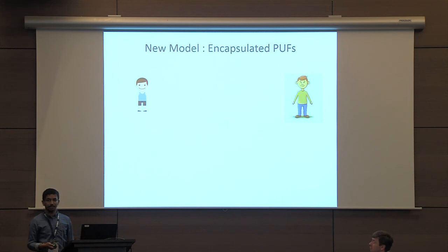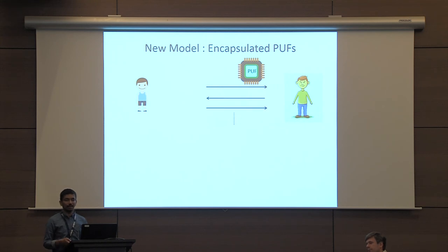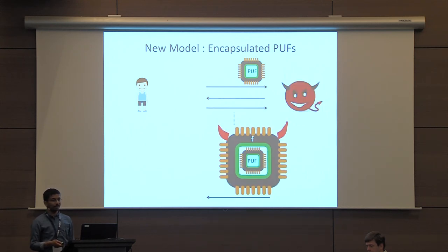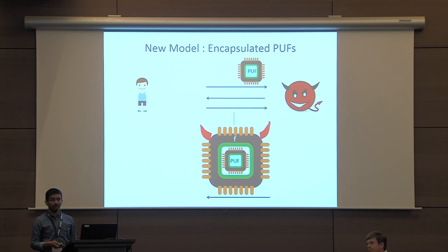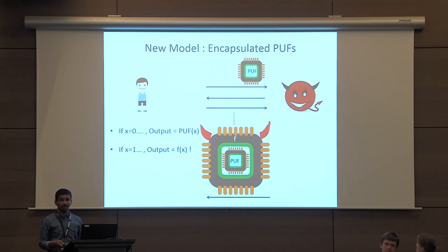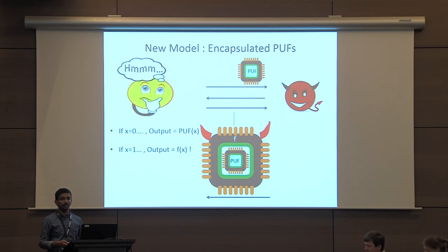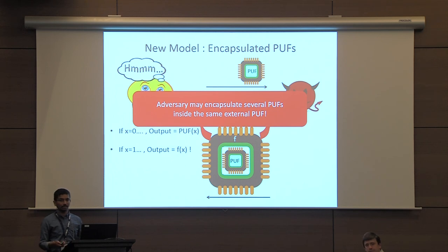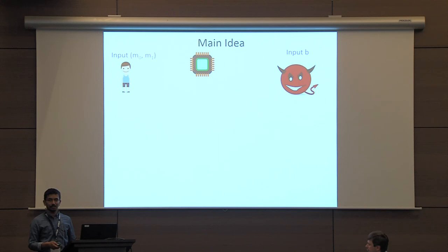Now let's go back to our new adversarial model of encapsulated PUFs. Suppose the sender sends a PUF to the receiver, and after several rounds the receiver must send the PUF back — but this receiver is malicious and instead sends back a new encapsulated PUF. For example, if the sender queries a string starting with 0, it answers like the original PUF; if the query starts with 1, it computes some other arbitrary function — possibly another PUF or several PUFs embedded inside. This is the stronger adversarial model. Unfortunately I don't have time to get into the details.